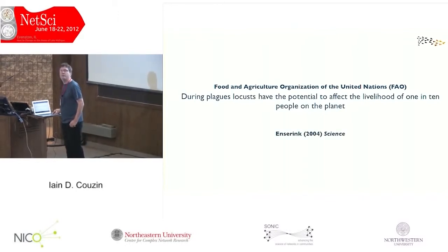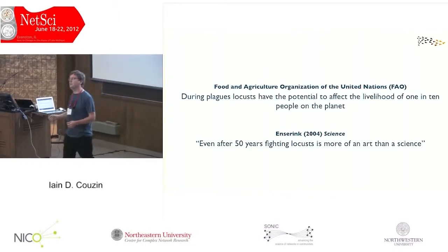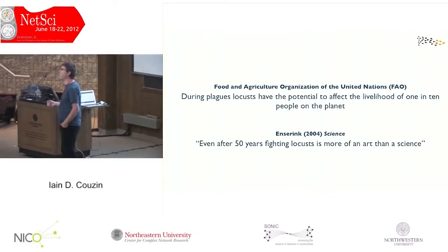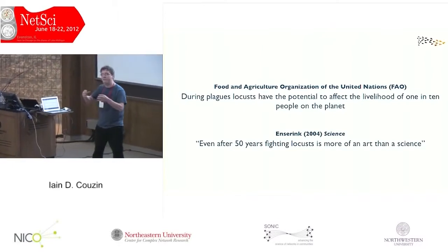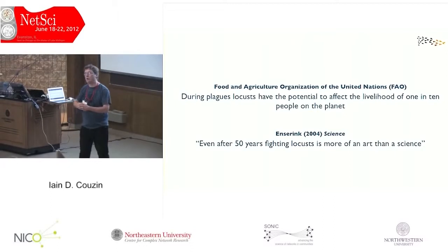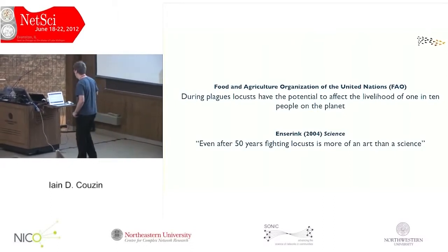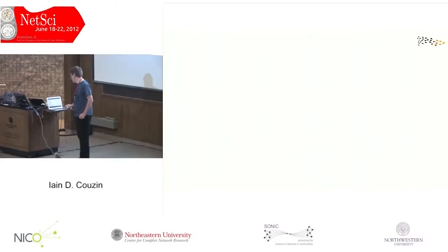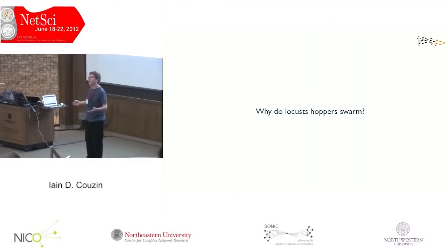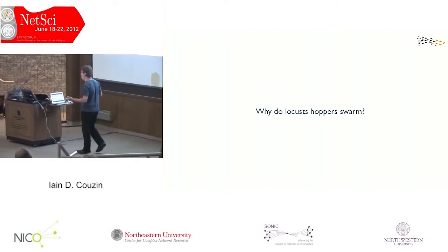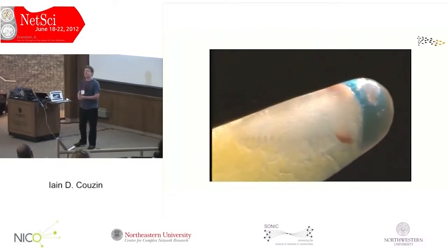In Science Magazine it was admitted, quite correctly, that even after 50 years of fighting locusts, it's more of an art than a science. This is remarkable because the individual locust is one of the best-studied organisms for physiology and neuroscience, especially in Europe. But why do these locusts swarm? We didn't know. So there are these big questions out there that we want to try to address.